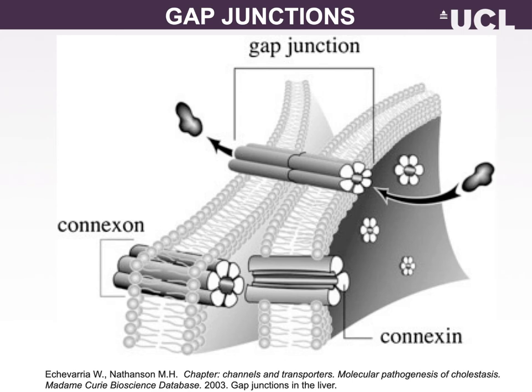Gap junctions are a common structural feature of many animal plasma membranes. They represent a primitive type of intercellular communication that allows transmembrane passage of small solutes like ions, sugars, amino acids, and nucleotides, while preventing migration of organelles and other polymers like proteins and nucleic acids. Gap junctions connect the cytoplasm of two adjacent cells through non-selective channels at locations where the gap between cells is only 2 to 3 nanometers — hence the term gap junction. Gap junctions are normally clustered in selected regions of the cell plasma membrane, ranging from a few to a thousand.